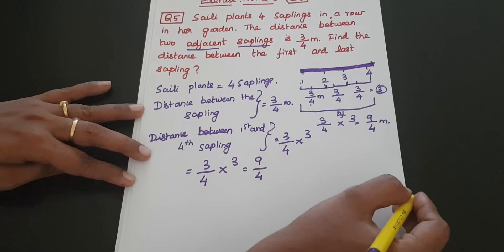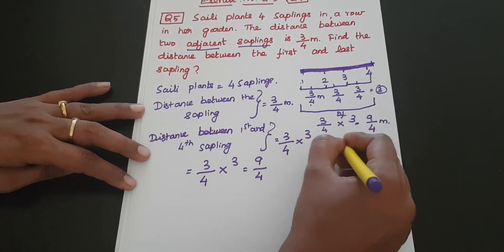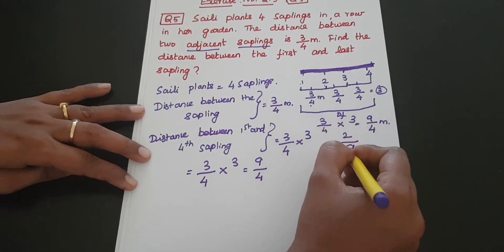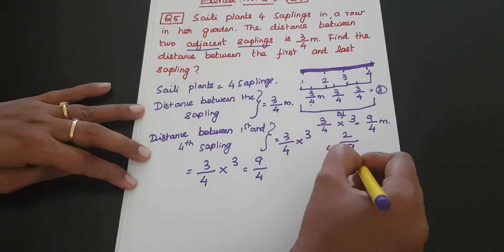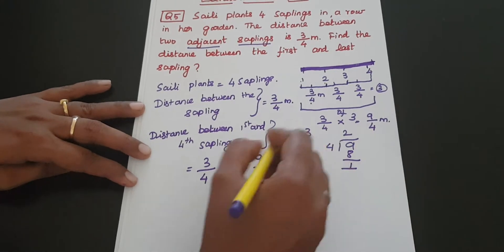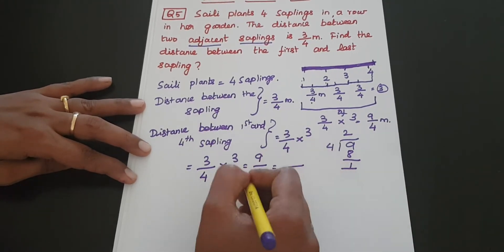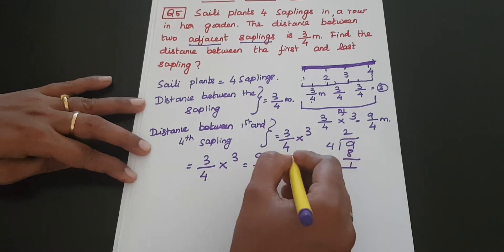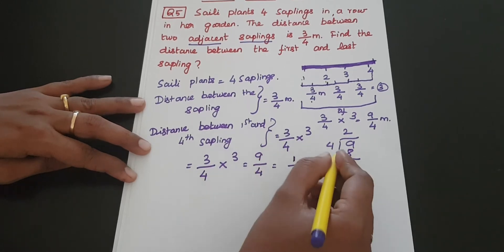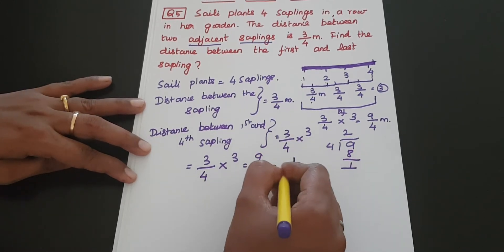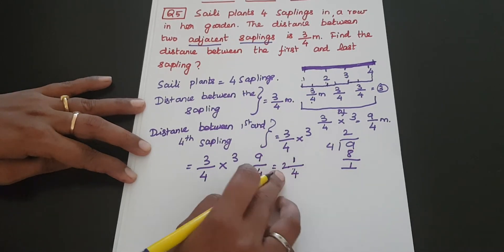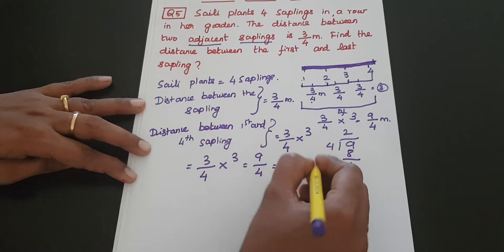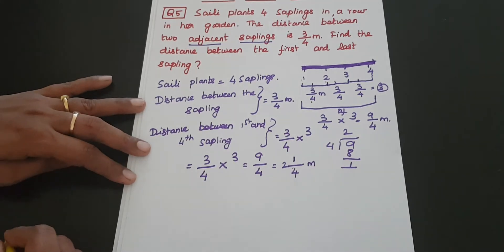Now let's convert this to a mixed fraction. 9/4: the quotient is 2, remainder is 1. 2 into 4 is 8, 8 plus 1 is 9. So the answer is 2 and 1/4 meter.